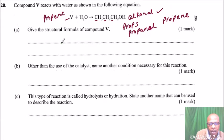So what is the formula? Propene has three carbons, and the general formula of an alkene is CnH2n. Therefore, propene is C3H6.